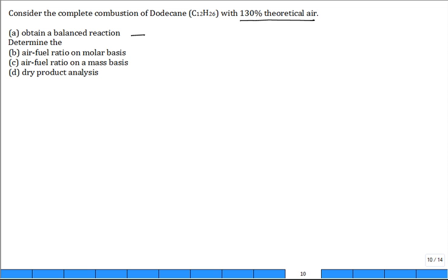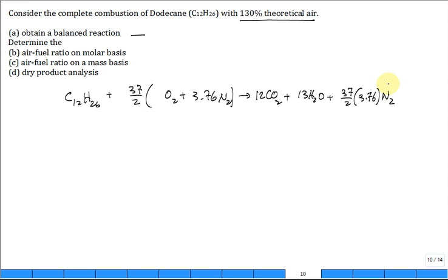And we did that in the previous problem. It was C12H26 plus 37/2 O2 plus 3.76 N2 go to 12 CO2 plus 13 H2O plus 37/2 times 3.76 N2. Leave that equation alone. You've got it 100% theoretical.